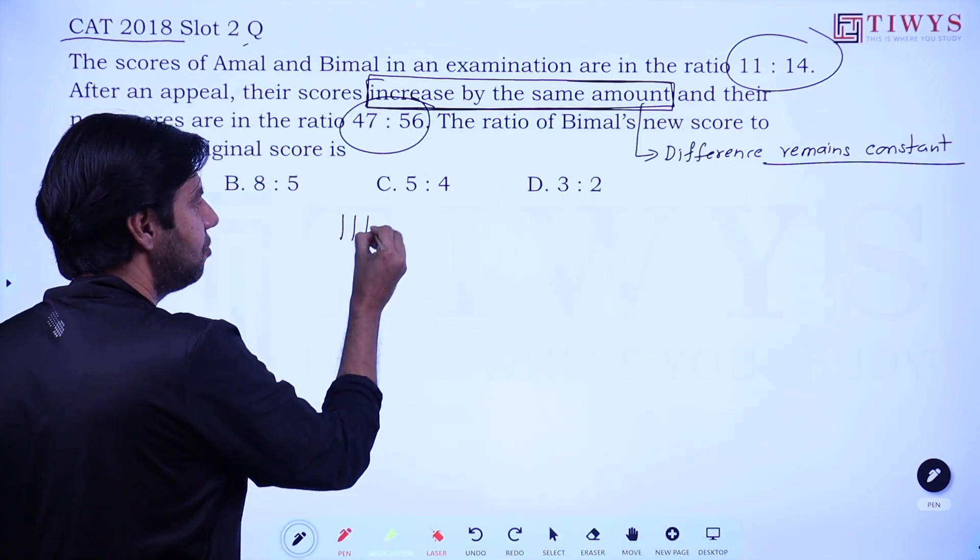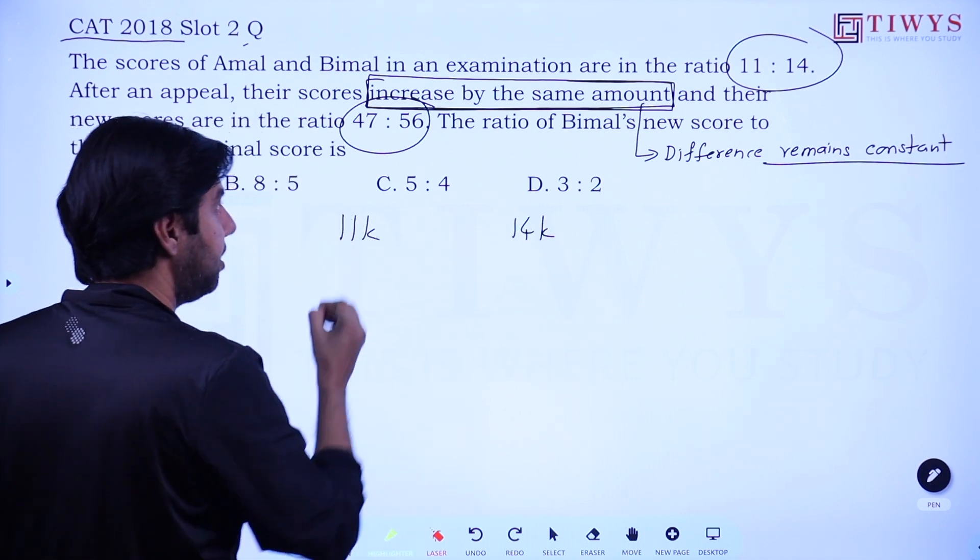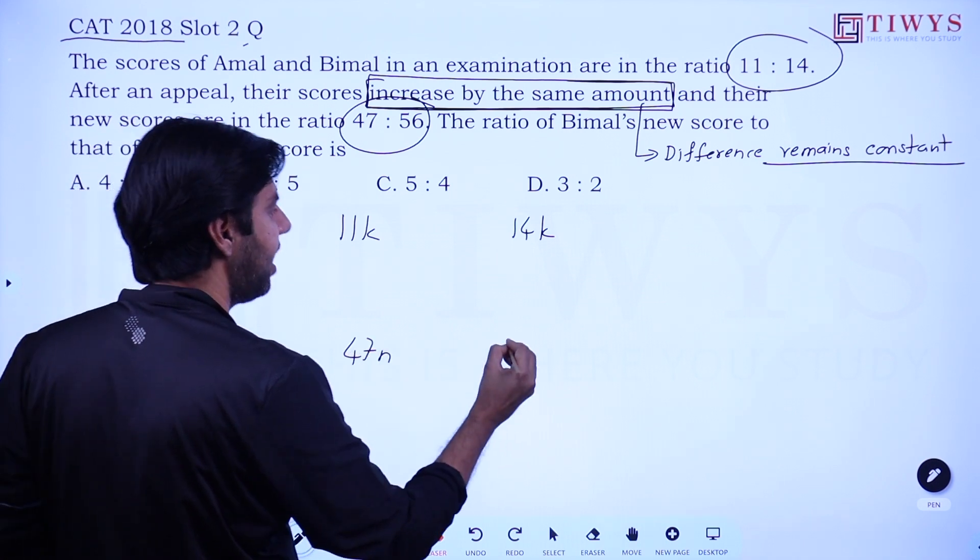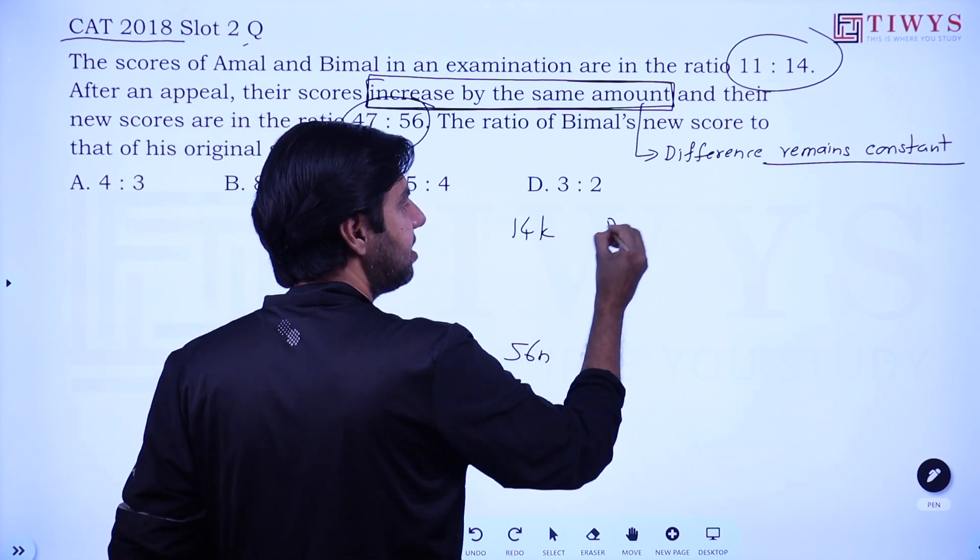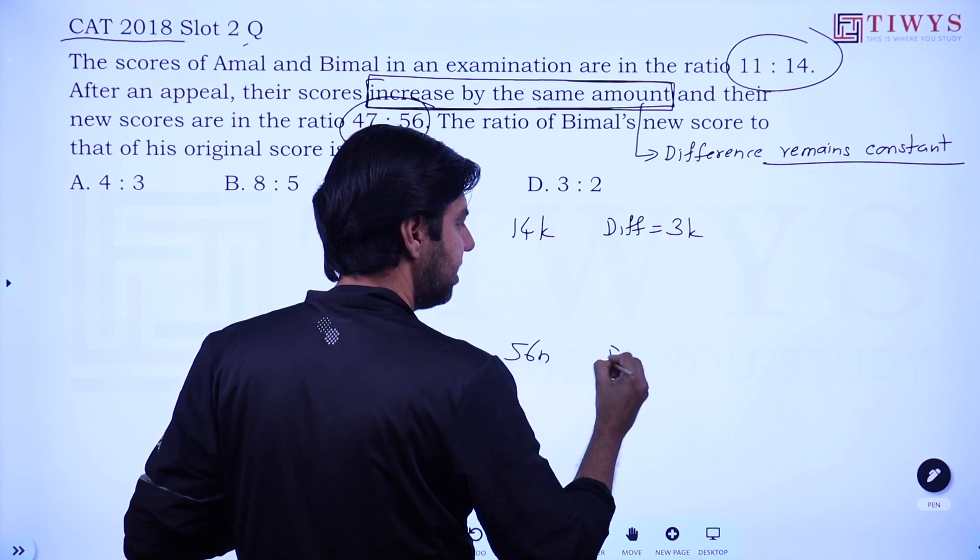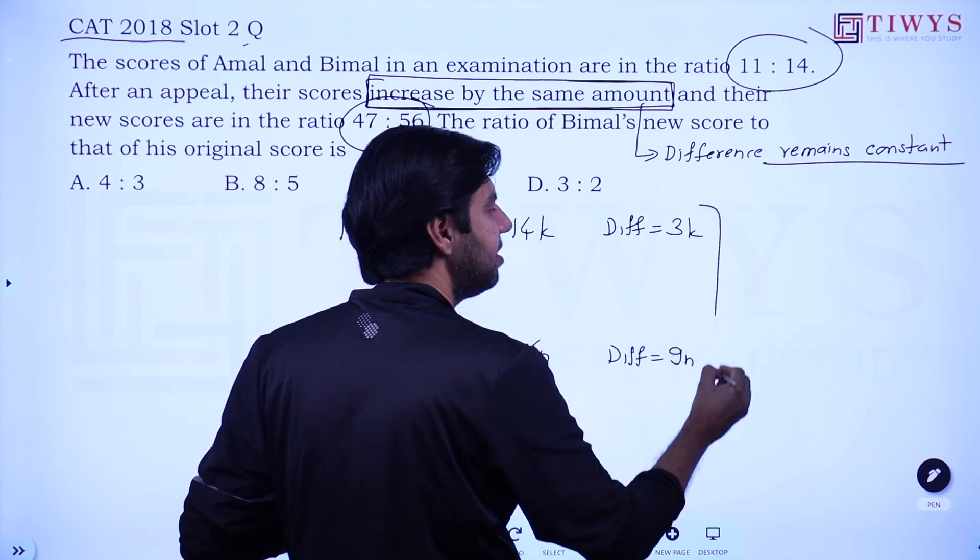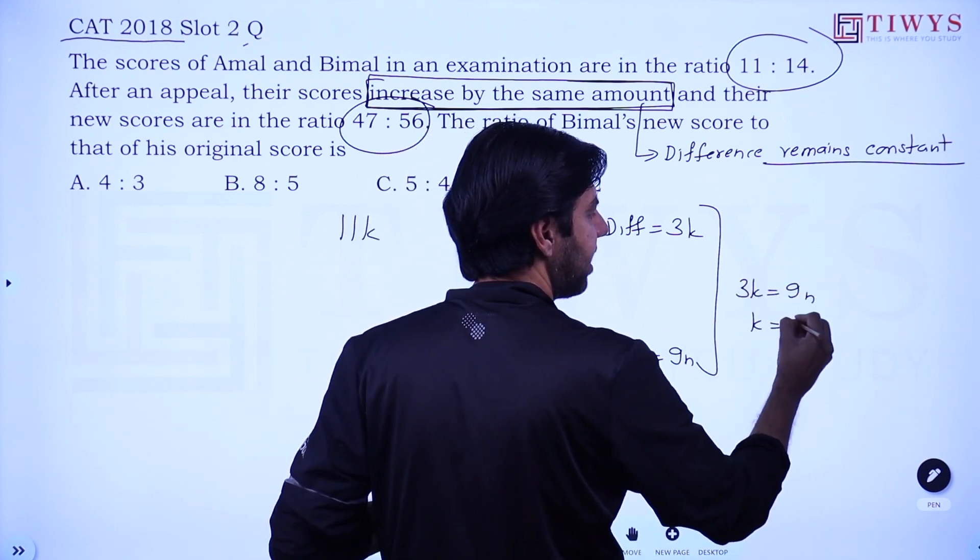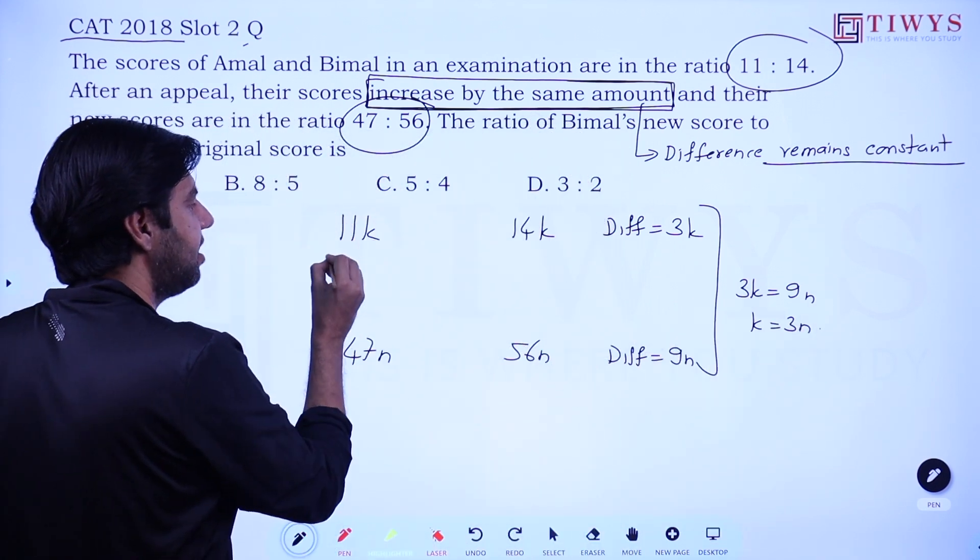And if you get such an insight, then it becomes a very easy question. The original values would have been 11k and 14k. The new values would have been with a different constant, 47n and 56n. The difference here is 3k. The difference here in the second case is 9n. And what I can be sure is the difference is same, so I easily get k equals 3n. So at the moment I replace k with 3n.